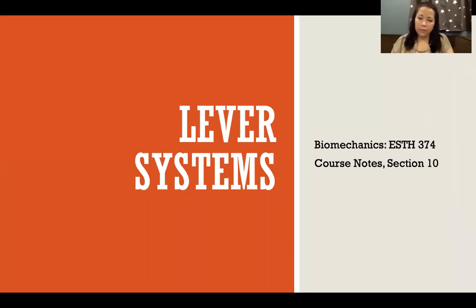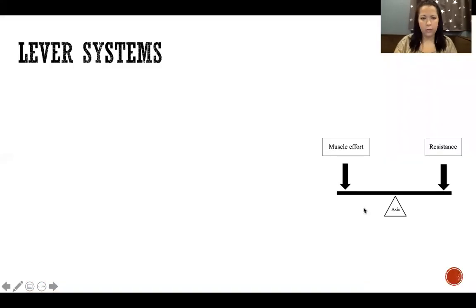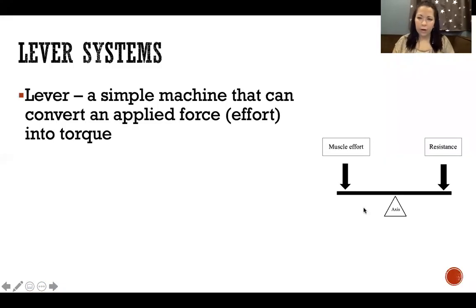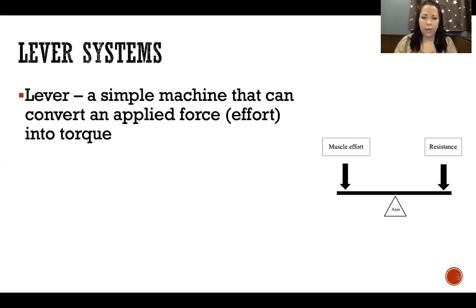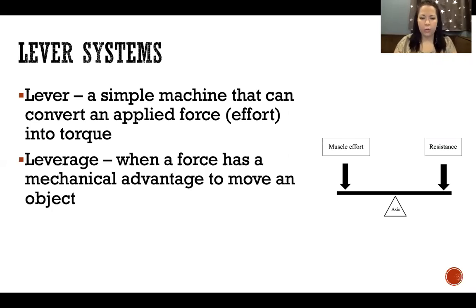Hello! In this video, we're going to talk about lever systems. A lever is a simple machine that can convert an applied force or an effort into torque. In biomechanics, that applied force or effort — we're always talking about our muscle effort. So the force produced by our muscles to move our levers, which are the bones.